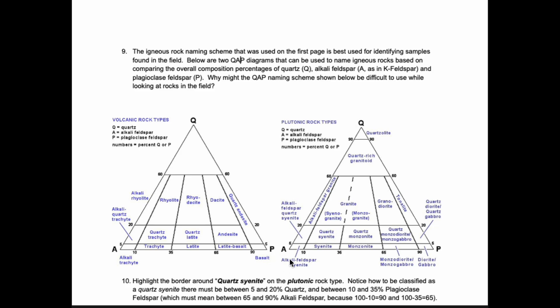Q stands for quartz, A stands for alkali feldspar — that famous K feldspar or orthoclase, that pretty pinkish salmon-colored mineral, with lots of potassium but possibly some sodium. And then P for plagioclase feldspar, where we might have some sodium, but we're almost assuredly going to have a lot of calcium. Plagioclase can have calcium but can never have potassium. Alkali can have potassium but can never have calcium.